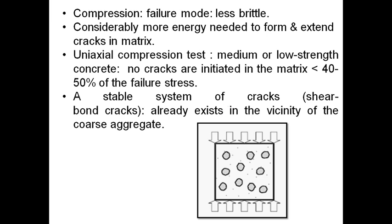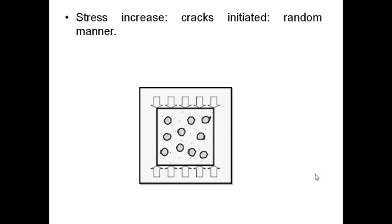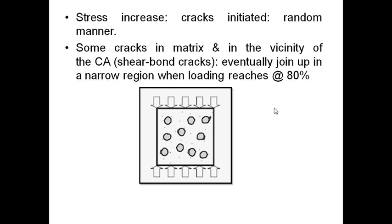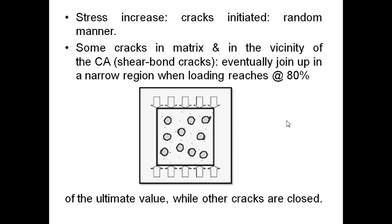A stable state of cracks, that is bond cracks, already exists in the vicinity of the coarse aggregates. As the stress increases, the cracks are initiated in random manner. Some cracks in the matrix and in the vicinity of the coarse aggregate eventually join up in a narrow region when loading reaches about 80% of the ultimate load while other cracks are closed.